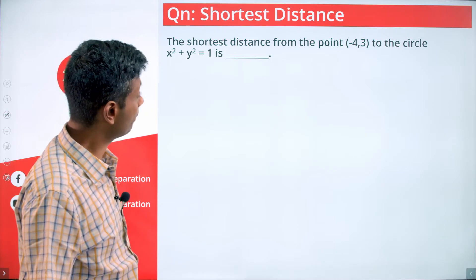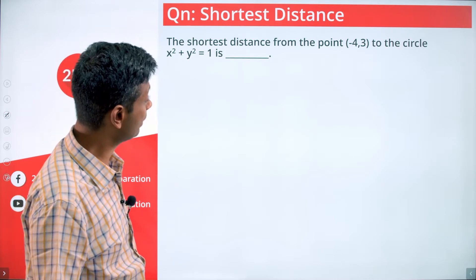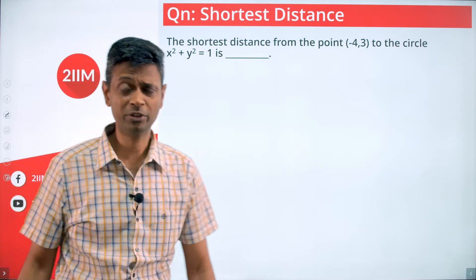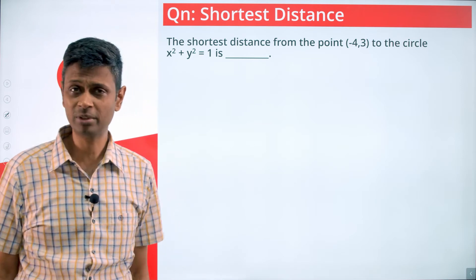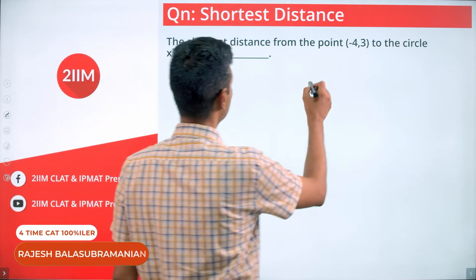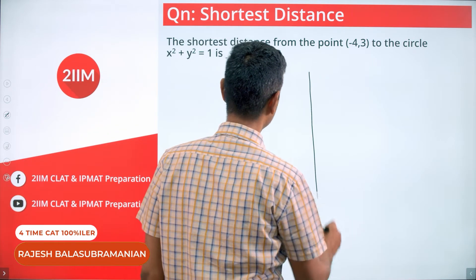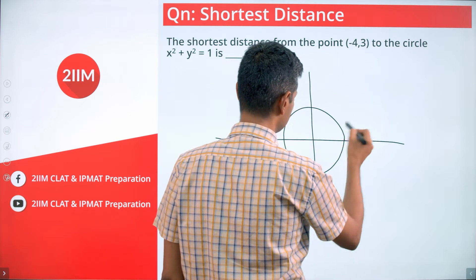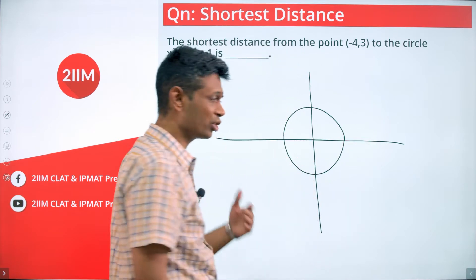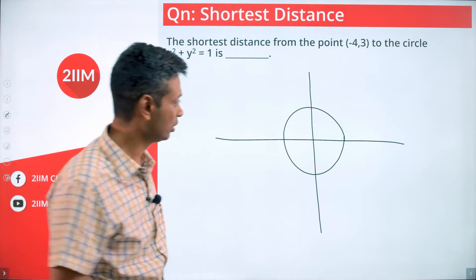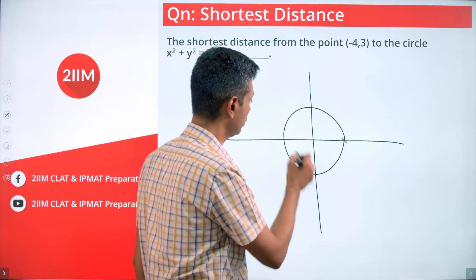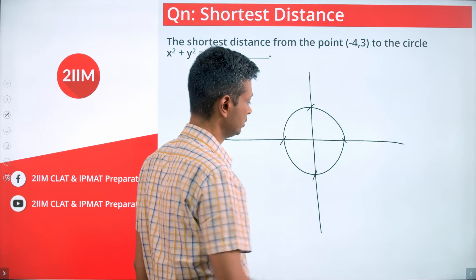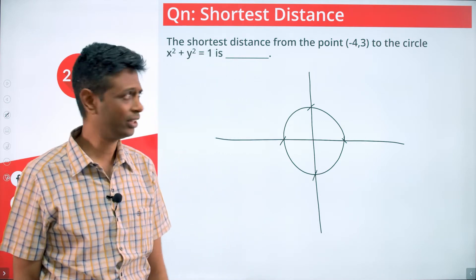The shortest distance from the point (-4, 3) to the circle x² + y² = 1. It seems like a tough question but it is not that difficult. Let us draw the circle: x² + y² = 1 is a nice circle with the origin as center and radius 1. The points on it include (1,0), (-1,0), (0,1), (0,-1), etc.